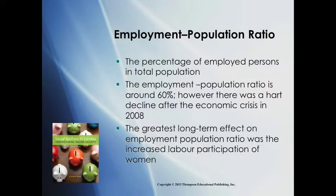Another measure of unemployment and employment rates is the employment population ratio. This ratio looks at the overall population and the number of people who are engaged in employment. It's an interesting statistic because it tells us something about how changes in the economy can change the number of people who are working, whereas the job creation rate might only tell us how many jobs are created. A single person might have two, three, even four jobs, so the number of jobs created doesn't necessarily tell us about how the ratio of employed people changes in the overall population. This information might also be useful for thinking about how many people are contributing to the Canada Pension Plan.